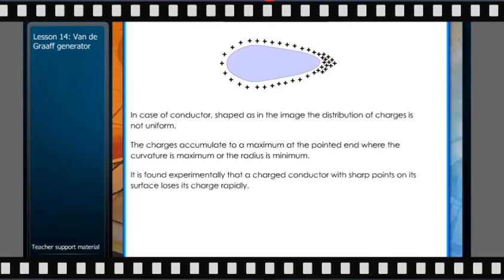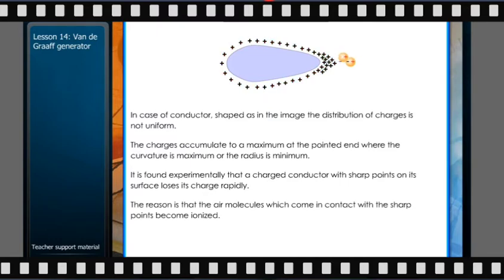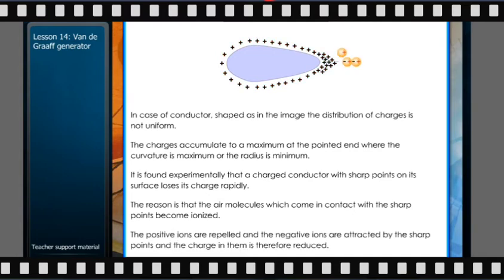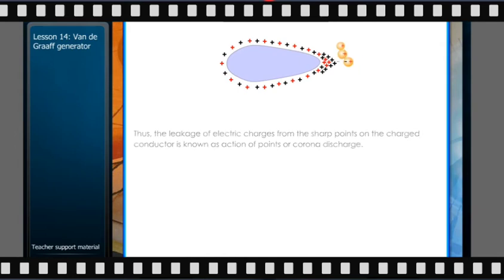It is found experimentally that a charged conductor with sharp points on its surface loses its charge rapidly. The reason is that air molecules which come in contact with the sharp points become ionized. The positive ions are repelled and the negative ions are attracted by the sharp points, and the charge in them is therefore reduced. Thus, the leakage of electric charges from sharp points on the charged conductor is known as action of points or corona discharge.